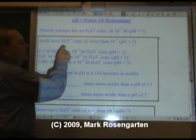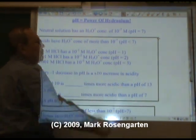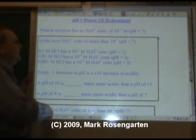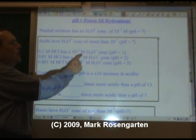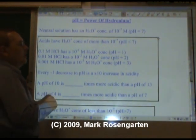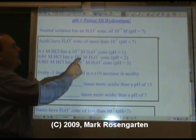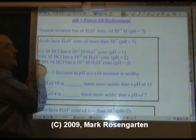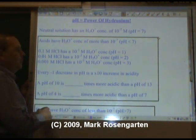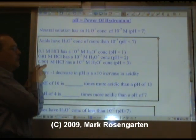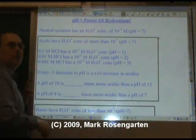Acids have to have a hydronium ion concentration of more than 10 to the negative 7th, which means the pH will be less than 7. For example, 0.1 molar HCl has a 10 to the negative first molar H3O plus concentration. Negative log of that is 1. A 0.01 molar HCl solution is 10 to the negative second molar hydronium ion concentration. That's a pH of 2. A 0.001 molar HCl has a 10 to the negative third molar H3O plus concentration. That's a pH of 3.